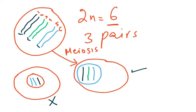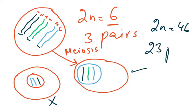If I say 2n is equal to 8, it means 4 pairs. If I say 2n is equal to 10, it means 5 pairs. Humans have 2n is equal to 46, so this means there are 23 pairs of chromosomes.